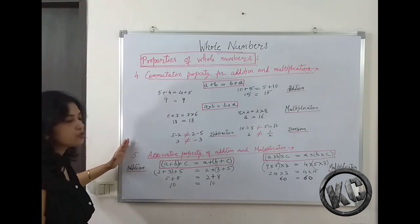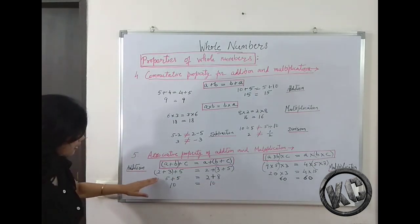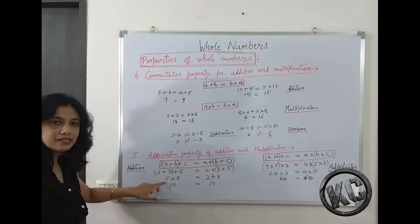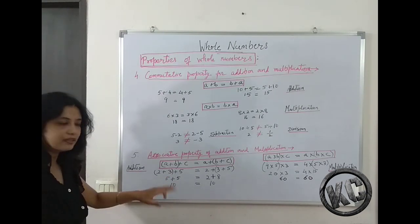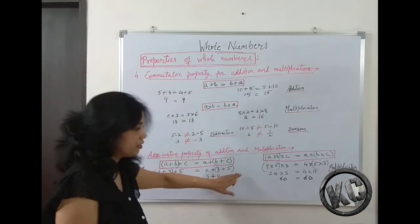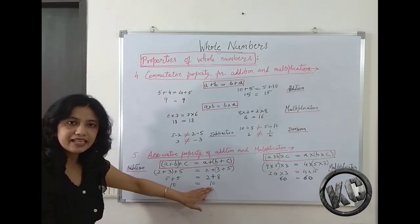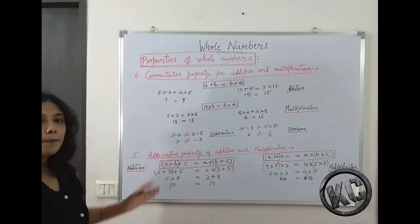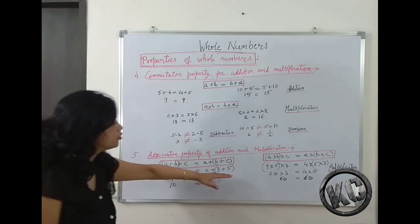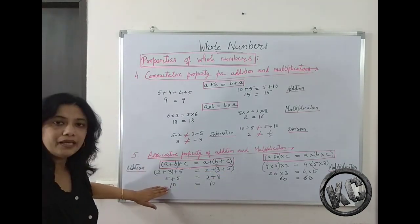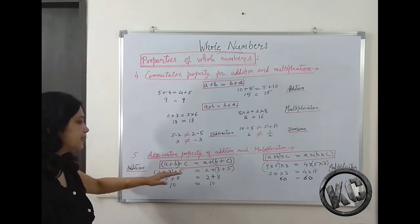Now let's see the associative property of addition and multiplication. In addition, for 2 plus 3 plus 5, we can add 2 plus 3 first to get 5, then add 5 to get 10. Or we can add 3 plus 5 first to get 8, then add 2 to again get 10. In addition, you can group whole numbers according to your convenience — whether you group 2 and 3, or 3 and 5, the answer remains the same. You can associate numbers according to your convenience.